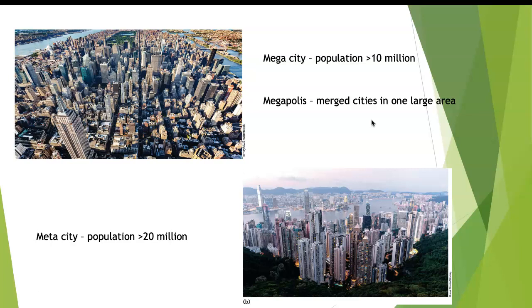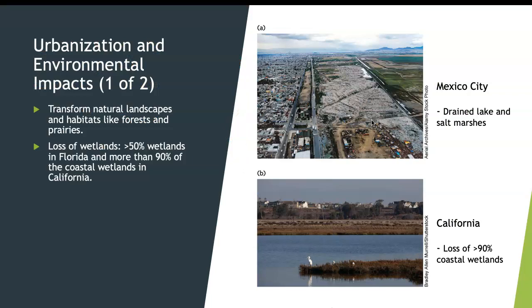For example, the Houston metropolitan area is hard to distinguish where exactly the boundary is between Sugarland and Houston, or Humble and Kingwood with Houston. It's like a lot of small cities all merging into one large city area.